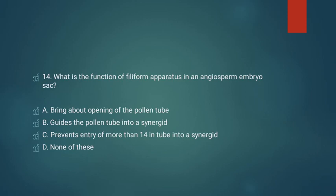Question number fourteen: what is the function of filiform apparatus in an angiosperm embryo sac? Option A: bring about opening of pollen tube. Option B: guides the pollen tube into synergids. Option C: prevents entry of more than one pollen tube into a synergid. Option D: none of these. The answer is option B — guides the pollen tube into a synergid.